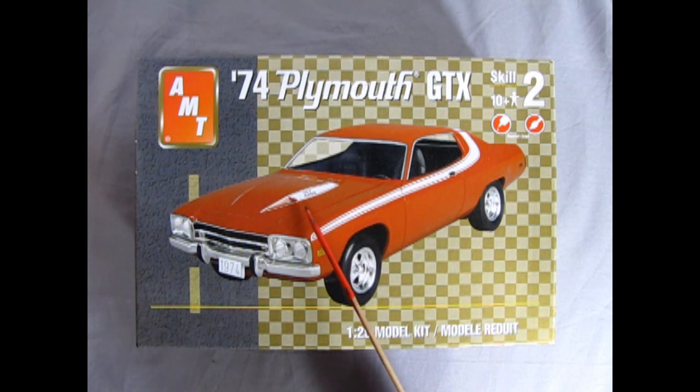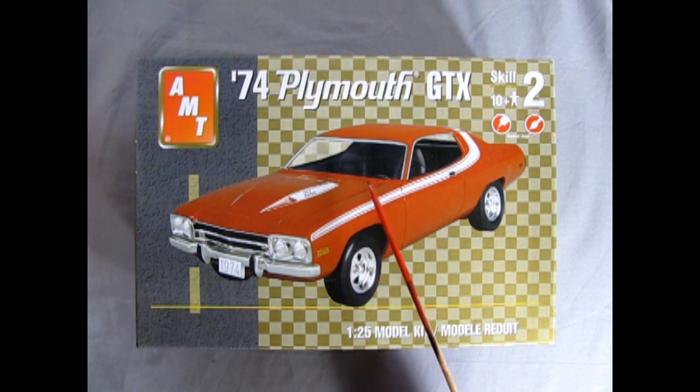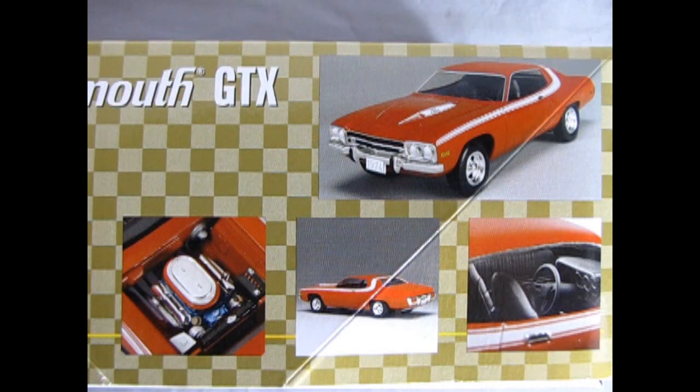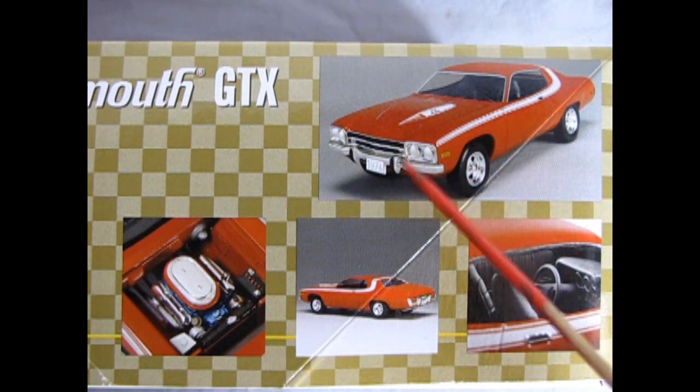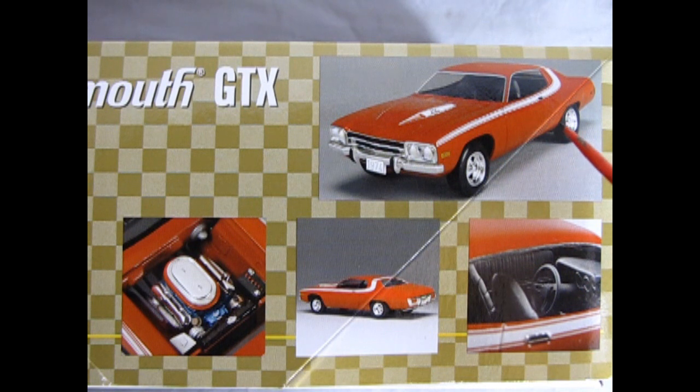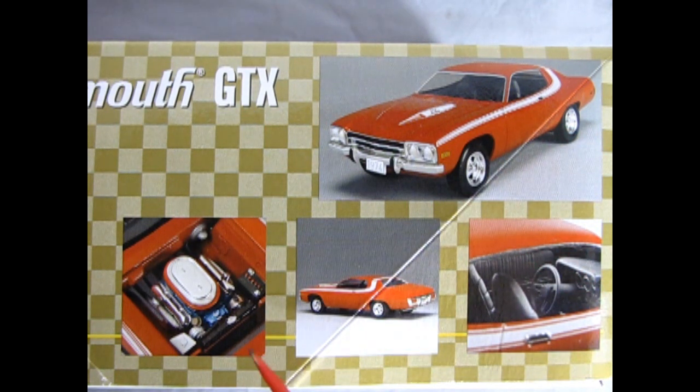Now one thing of note is on the box there are these decals on here and it does say GTX 446 pack, and unfortunately the 446 pack was eliminated out of the engine option back in 1971. On the side of the box we have these excellent photographs of the built-up model, looking like sort of a Starsky and Hutch type of deal. There's our 446 pack engine underneath and there's a nice rear view of the car as well as a shot with the interior.